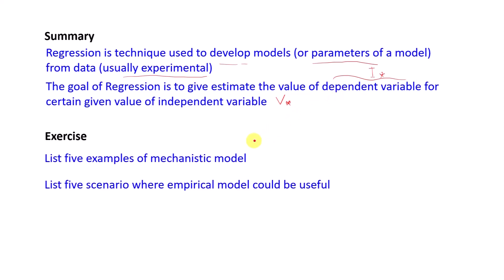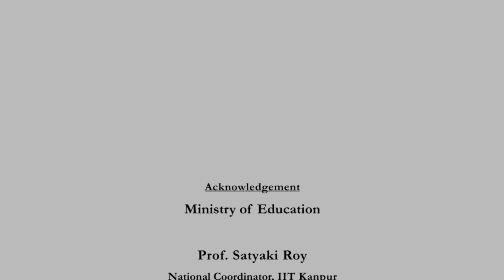For your exercise: list five examples of mechanistic models you have learned in different courses, where you can take certain input, solve some equations — possibly linear equations, ODEs, PDEs, etc. — and get some output. These are mechanistic models derived from known mechanisms. Then list five scenarios where an empirical model could be useful — where mechanistic models are not available or are too complex to be of any use. That's all for this lecture. Thank you, and I'll see you in the next class.